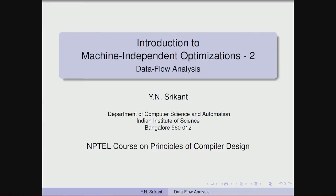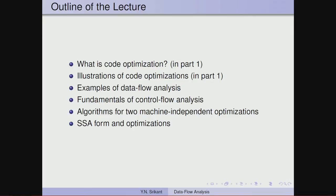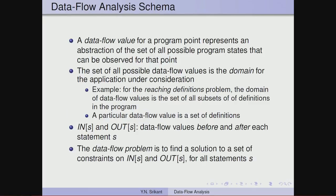Welcome to part 2 of the lecture on machine independent optimizations. Today we will continue our discussion on data flow analysis. We covered illustrations of code optimizations in the last part. To do a bit of recap, a data flow value for a program point represents an abstraction of the set of all possible program states that can be observed for that point.